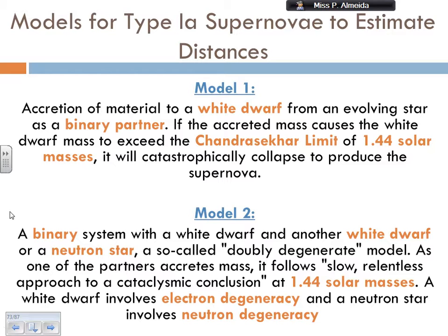I can have two models of type 1a supernovae to estimate distances. One is when I have a white dwarf in a binary system with any companion star — once it reaches the Chandrasekhar limit of 1.44 solar masses, I have the collapse and the supernova. The other model — which also matches observations in computer simulations — involves a binary system where I have a white dwarf paired with either another white dwarf or a neutron star.